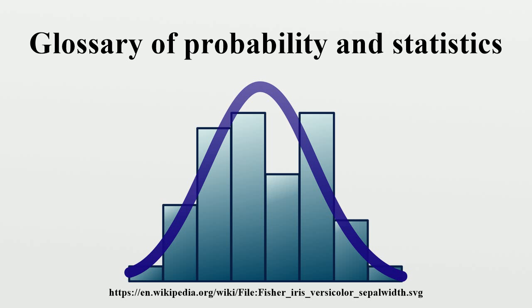Likelihood function: a conditional probability function considered a function of its second argument, with its first argument held fixed. For example, imagine pulling a numbered ball with the number k from a bag of n balls, numbered 1 to n. Then you could describe a likelihood function for the random variable n as the probability of getting k given that there are n balls.